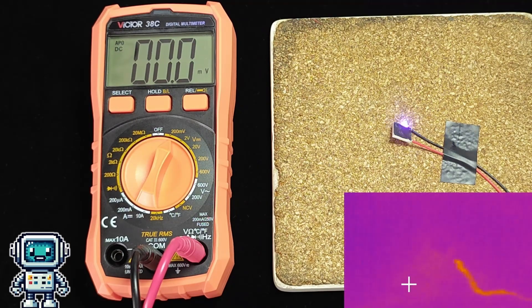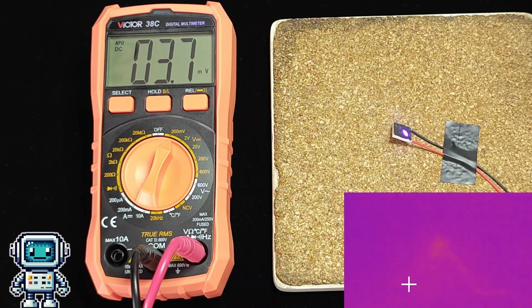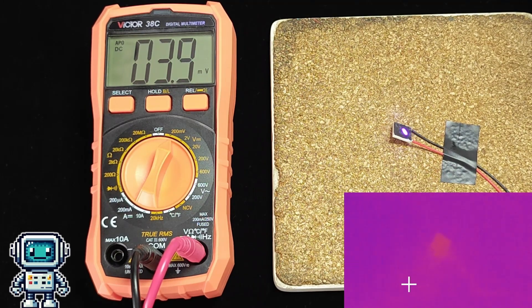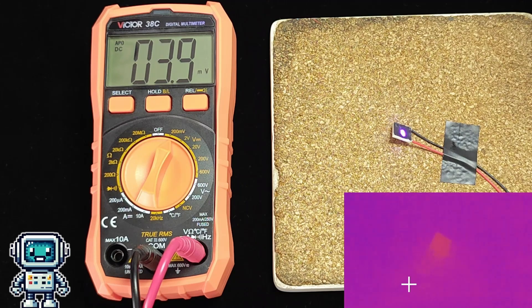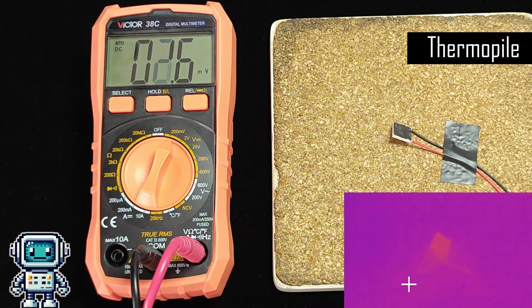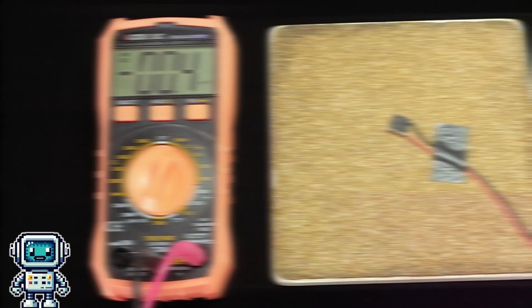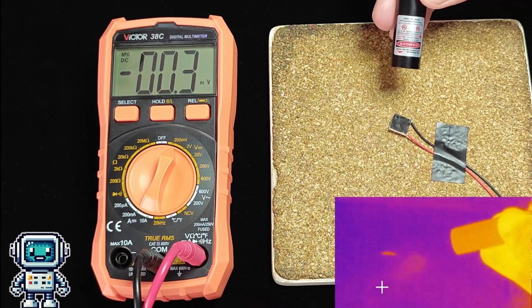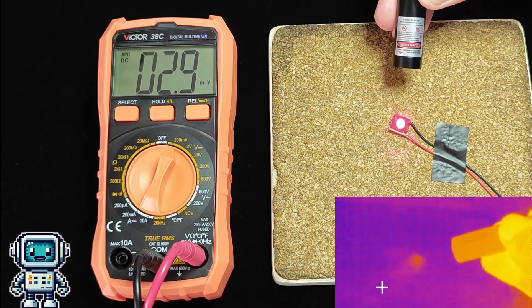So let's look at what happens when we shine a violet laser onto our improvised power sensor. As you can see, there is a current produced. This type of sensor is often called a thermopile. Until we researched this video, we were completely unaware that many of the lower cost laser power meters use this rather innovative technique.